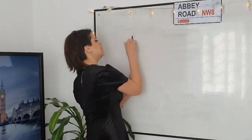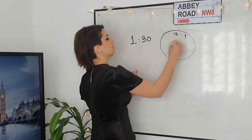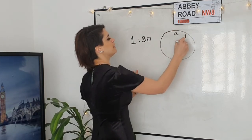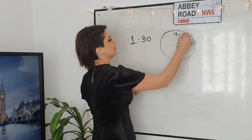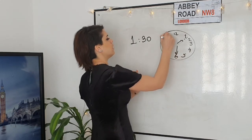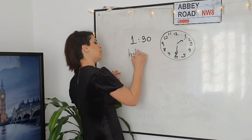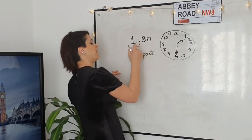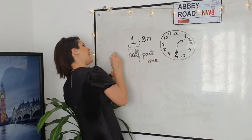Now let's go to the board so we can write it on your copy box. Come on, come with me. So if we have the clock, half past one is exactly like this — two, three, four, five, seven, eight, ten and eleven. So this is half past and then the number — half past one. So you can say it's half past one.